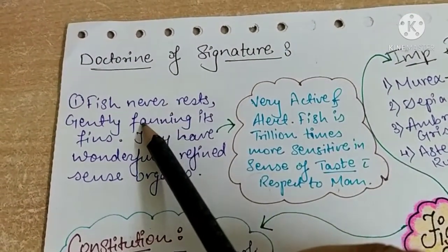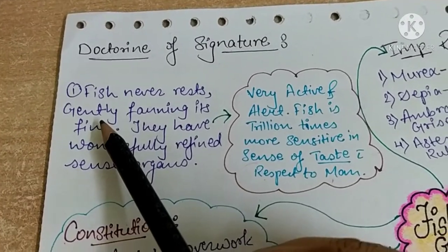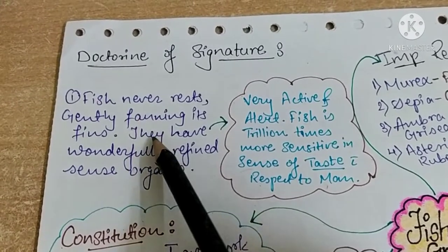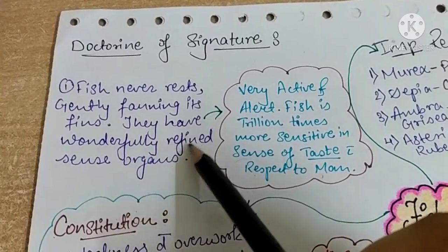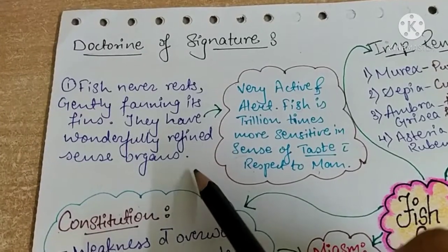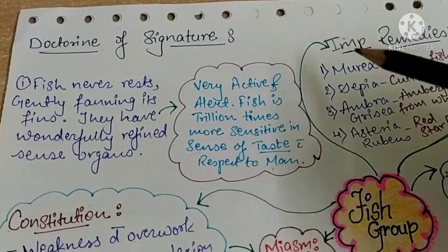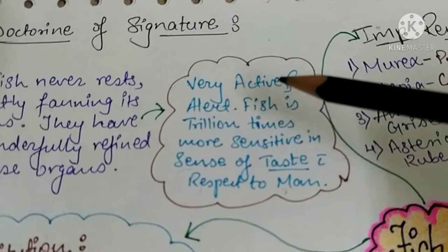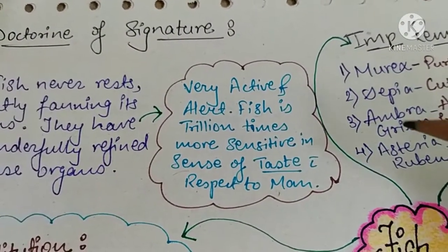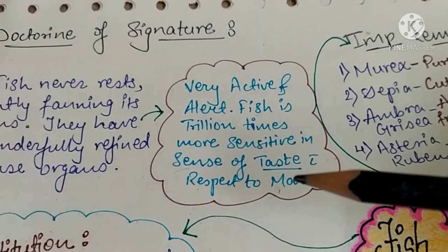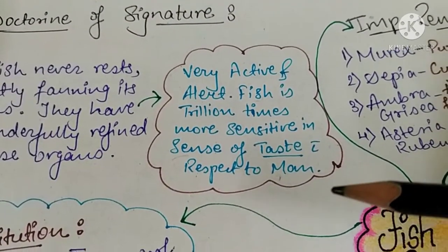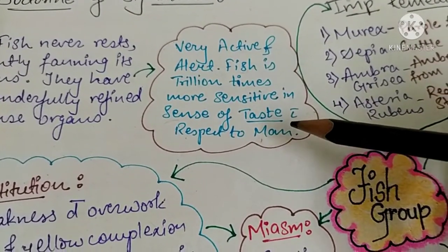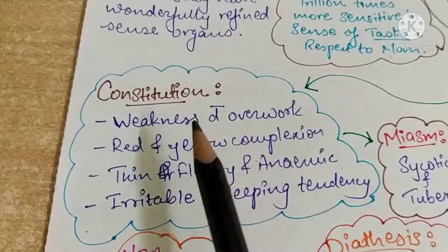Doctrine of Signature: Fish never rests, gently fanning its fins — they are continuously in motion. They have a wonderfully refined sense organ; their senses are very sharp and keen. Similarly, these signs are seen in patients, as the patient is very active and alert. Fish is trillions of times more sensitive in sense of taste with respect to man.